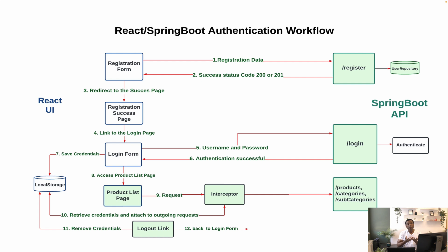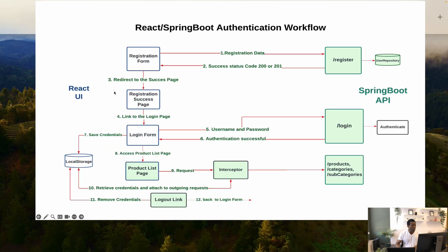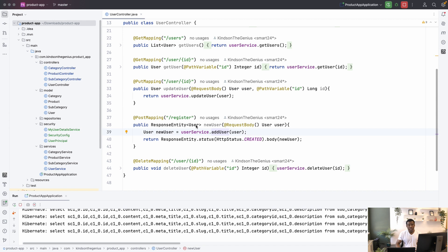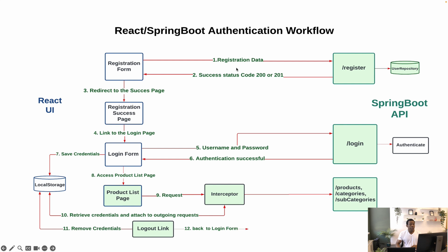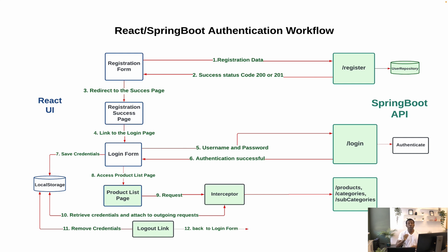The register endpoint accepts the user data — username, password, first name, and last name — as part of the request body. It registers the user and saves the data in the MySQL database. Step two: it returns a success code, either 200 or 201 Created. If registration is successful, we redirect the user to a success page. We don't have the registration form or success page yet — we are going to create them.